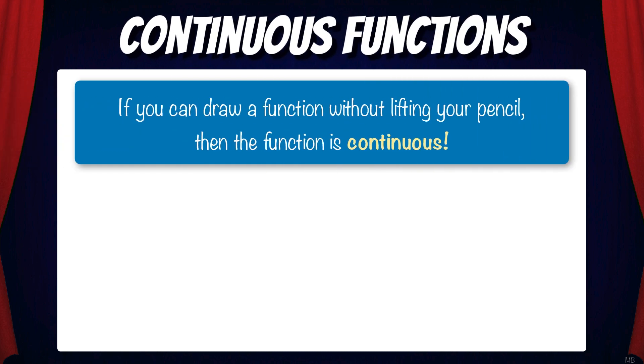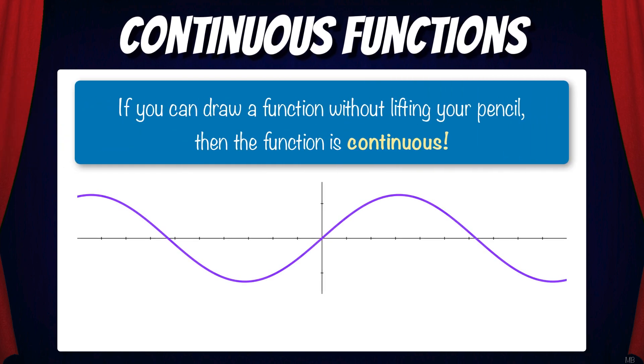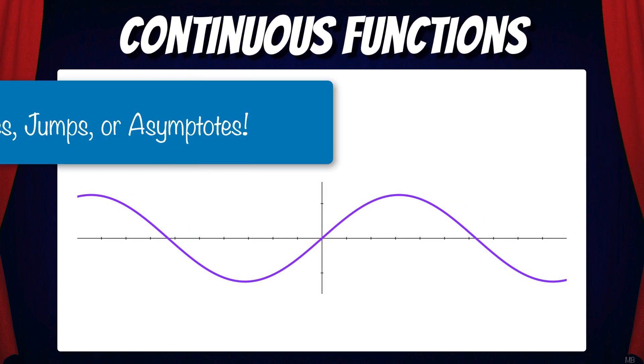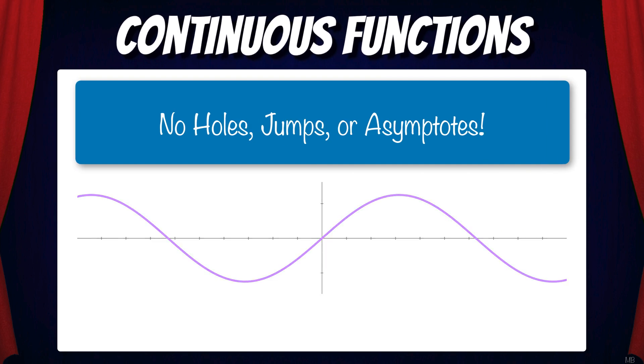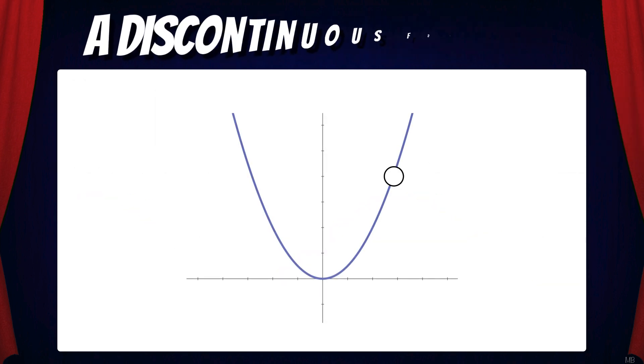If you can draw a function without lifting your pencil, then the function is continuous. In other words, there are no holes, jumps, or asymptotes on the graph.